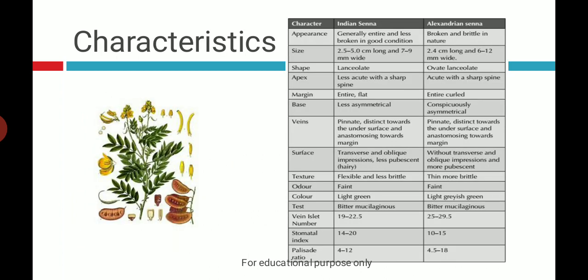Now we'll see the macroscopy. Indian Senna and Alexandrian Senna are differentiated on different parameters. In terms of appearance, Indian Senna has generally entire, less broken leaflets and is in good condition. The size of Indian Senna is 2.5 to 5 centimeters long and 7 to 9 millimeters wide.